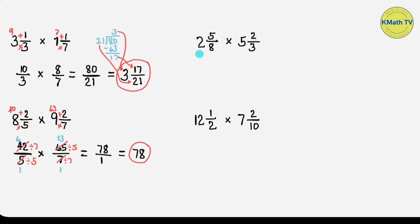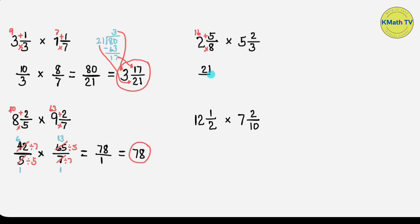Next, let's multiply 2 and 5/8 times 5 and 2/3. First step: change the mixed numbers to improper fractions. Multiply the denominator and the whole number: 8 times 2 equals 16. Then add the numerator plus 5: 16 plus 5 equals 21. This is the new numerator. Copy the denominator: 8.